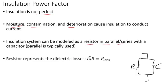What you see here is a capacitor in parallel with a resistor. The resistor basically represents the dielectric losses. We know there should be no current flowing, but because insulation is not perfect, there will be some losses.